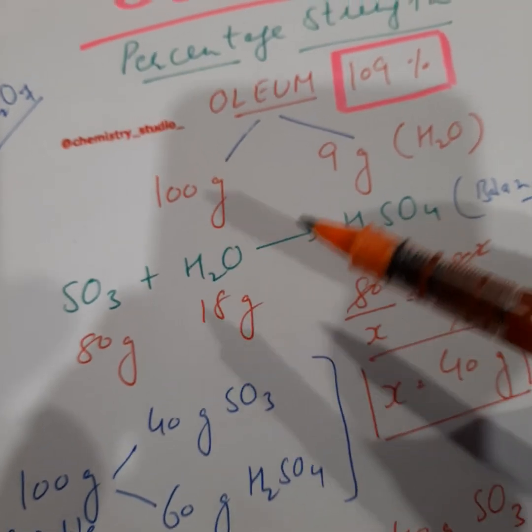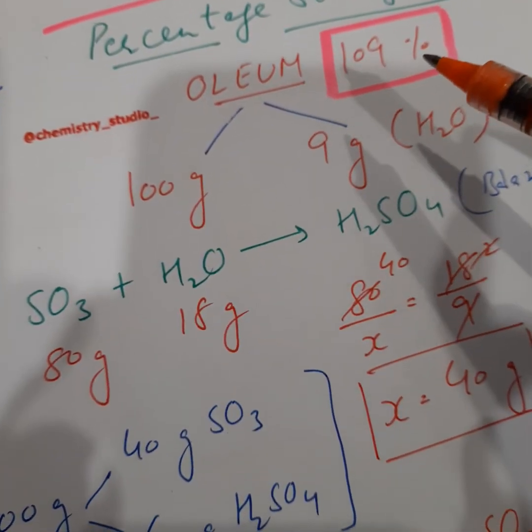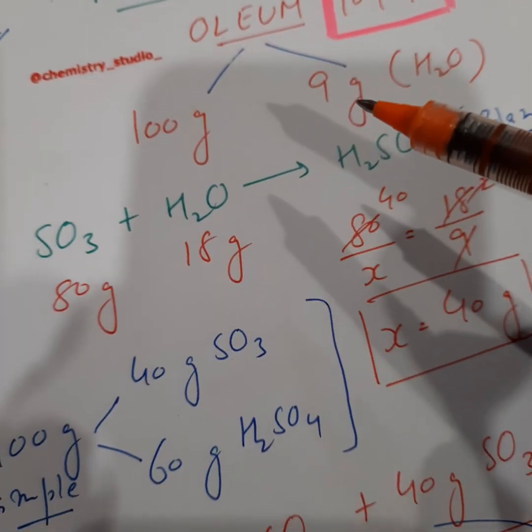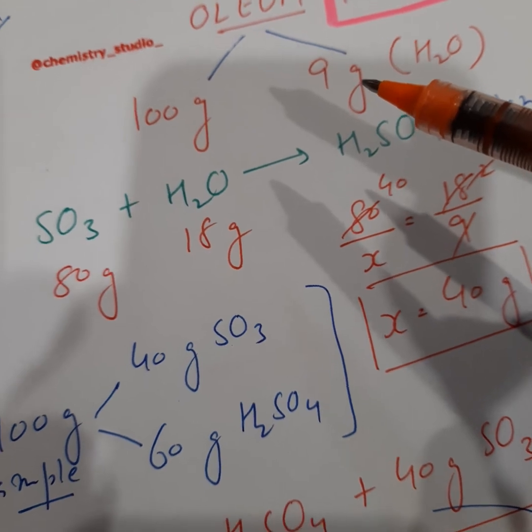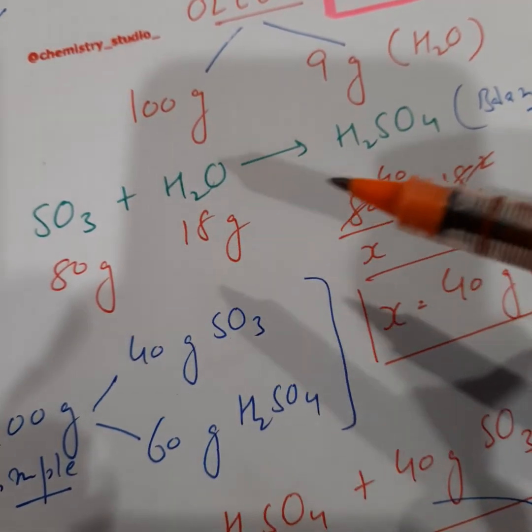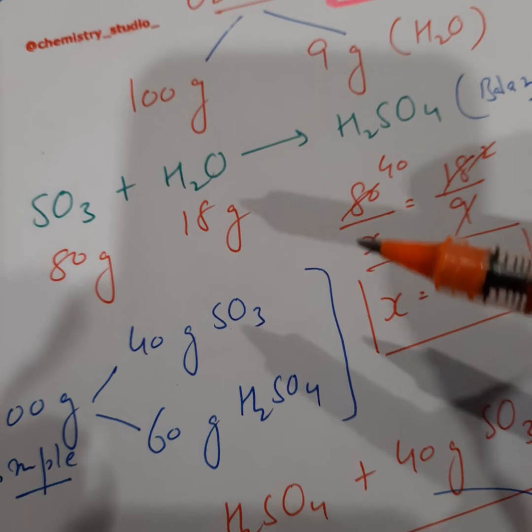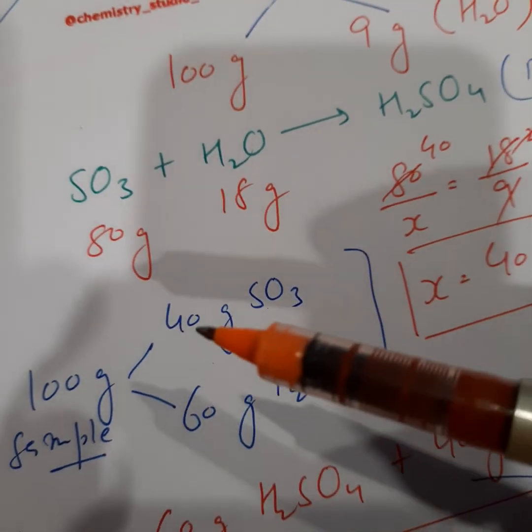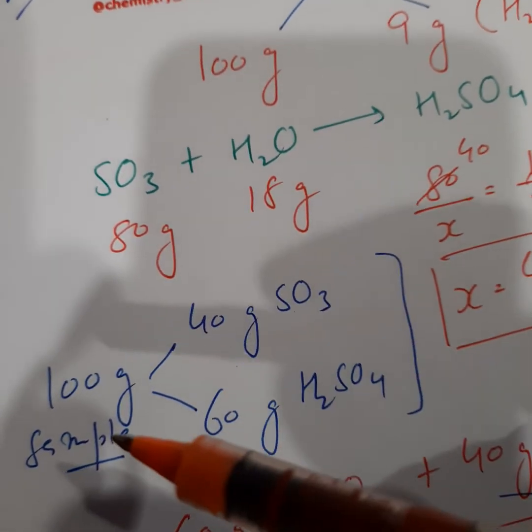So after calculation now we can see it is going to react with 40 grams of sulfur trioxide. Now this means that from 109% sample of oleum, it requires 9 grams of water to convert all the sulfur trioxide to sulfuric acid, which means it is going to have 40 grams of sulfur trioxide in a 100 gram sample.